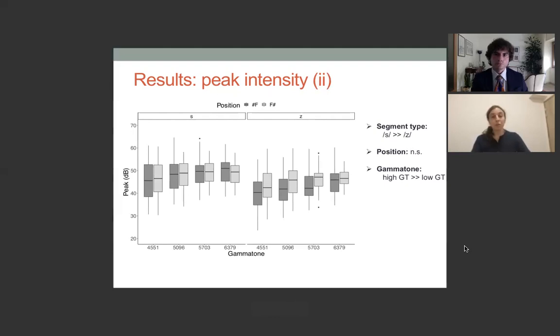What you see here are now the results for the models which focused on the four gammatones in the high frequency region. So again, we're looking at peak intensity, and on the left are S's and on the right the results for Z's. And on the X axis, you see from left to right the four gammatones for both fricatives and peak in decibels on the Y axis. Again, we found an effect of segment type, so S's had a higher peak than Z's. There was no effect of position here. Initial fricatives had the same peak as final fricatives. And there was a main effect of gammatone whereby high gammatones had a higher peak than lower gammatones.